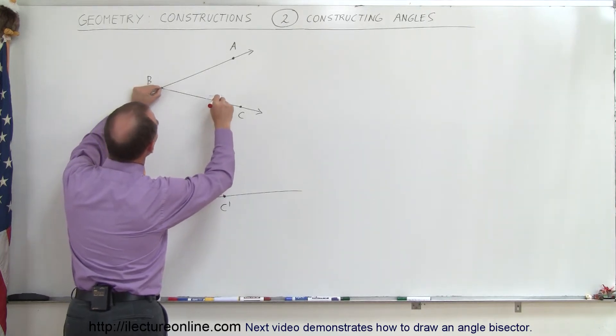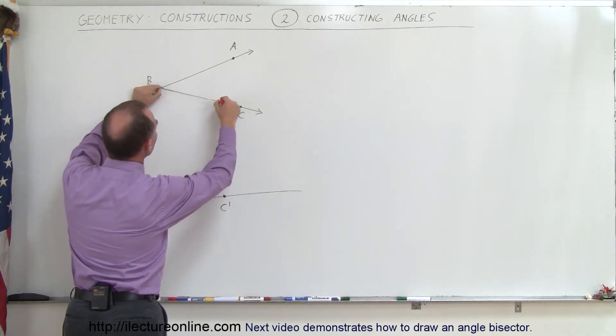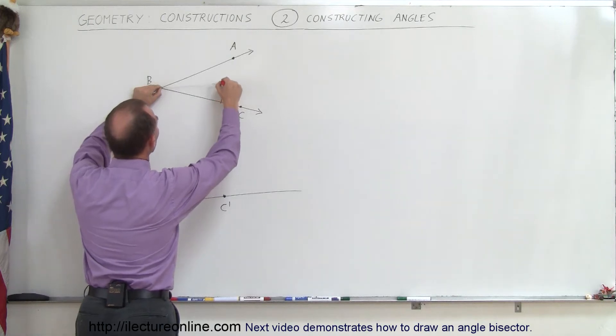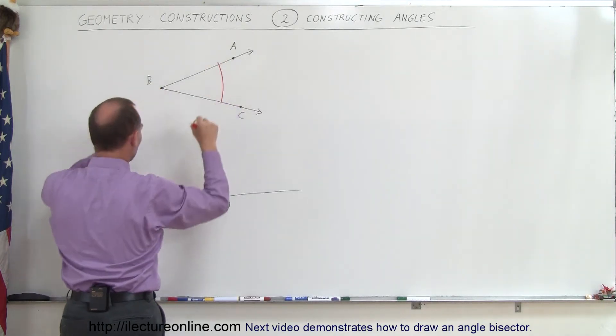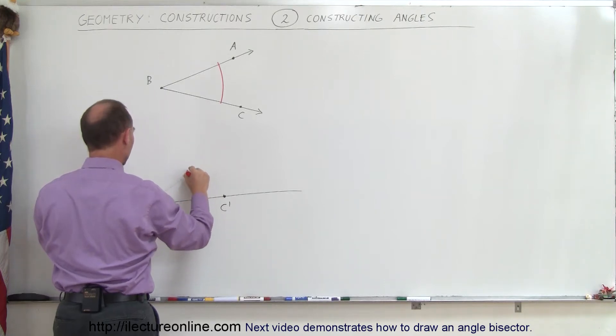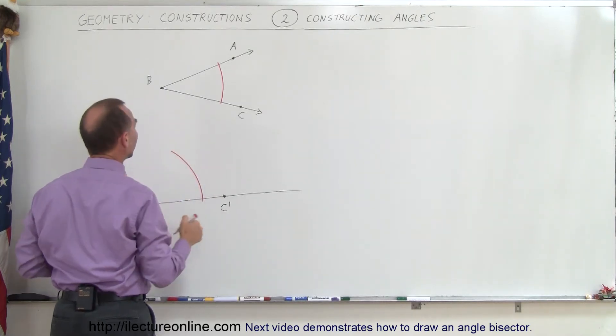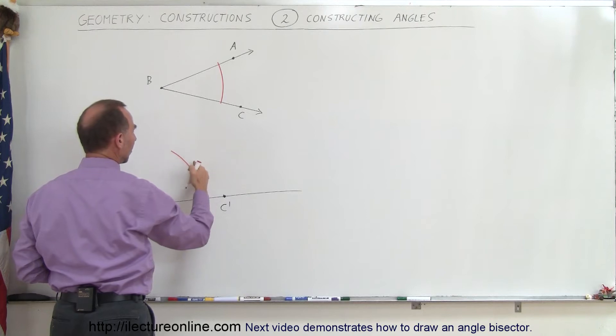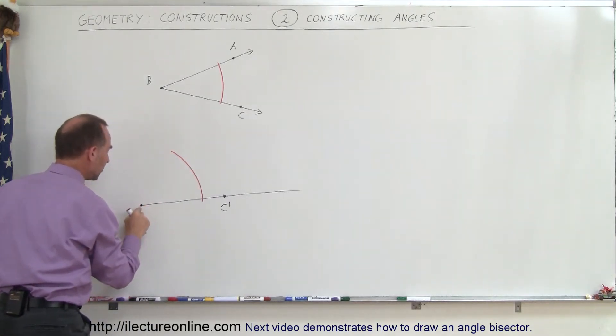A little bit shorter than the distance from B to C. So I put my point right there on B and I draw an arc going across like this. And I come over here from B' and I draw a similar arc across like this. All right, so I know that this arc and this arc is equal distance from B' as this is distance to B.